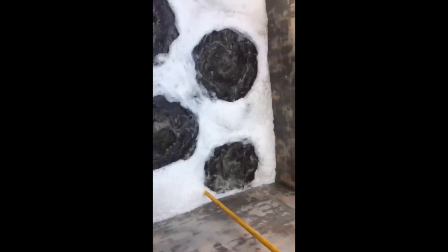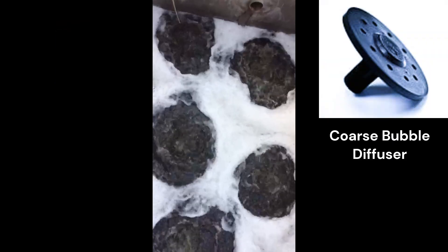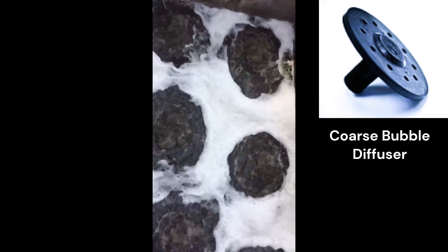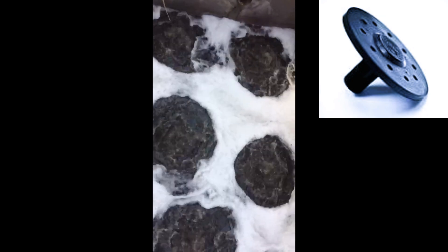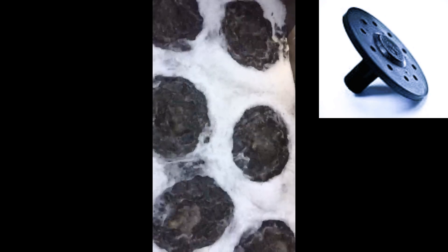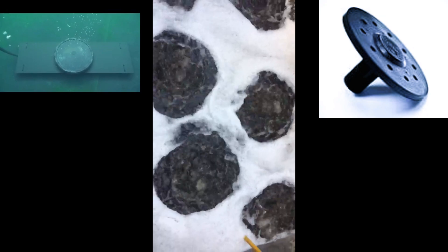The equalization tank doesn't just store wastewater — it also incorporates coarse bubble diffusers, which play a crucial role in the treatment process. Coarse bubble diffusers are specially designed devices that release large air bubbles into the equalization tank. These bubbles serve a dual purpose: agitating the wastewater and increasing the oxygen transfer efficiency.